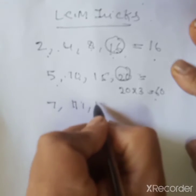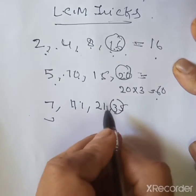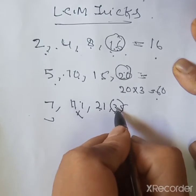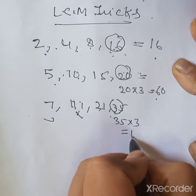7, 11, 21, and 35. Highest number is 35. 35 is divisible by 7, but not by 11 and not by 21. So we make it divisible by 21. We multiply 35 into 3. It is 105.